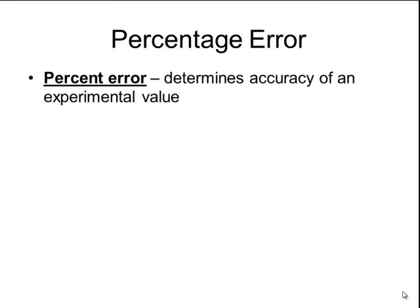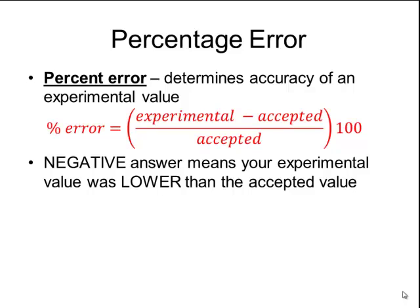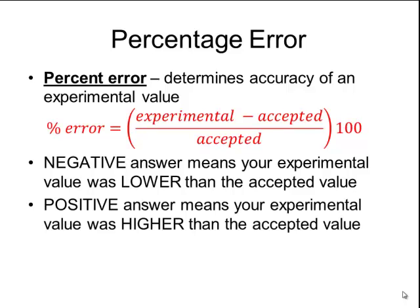We can determine the amount of measurement error by calculating percent error, which determines the amount of accuracy in an experimental value. To calculate percent error, take the experimental value minus the accepted value, divide that by the accepted value, and multiply by 100. A negative answer means the experimental value was lower than the accepted value, whereas a positive answer means the experimental value was higher than the accepted value.